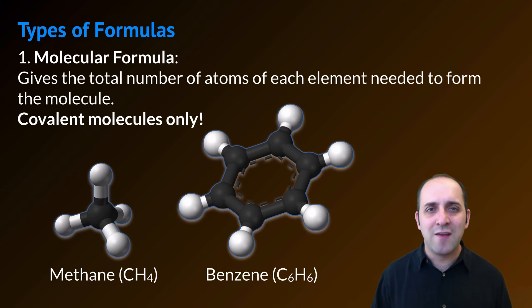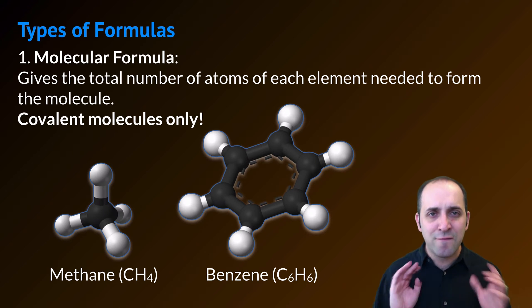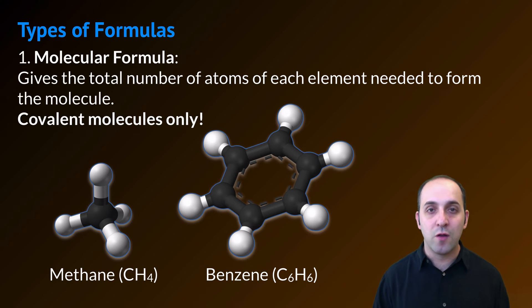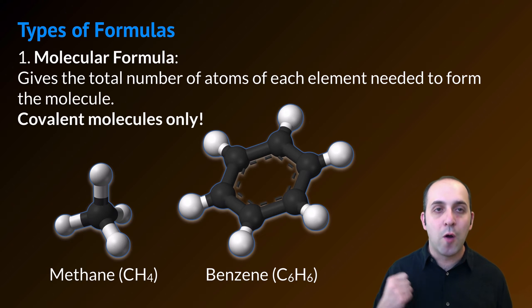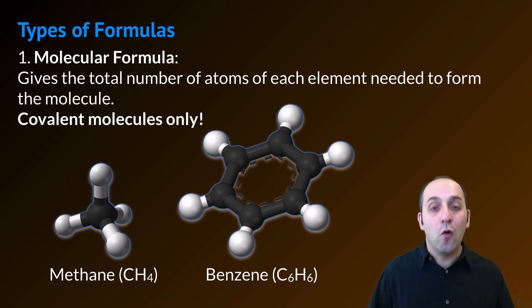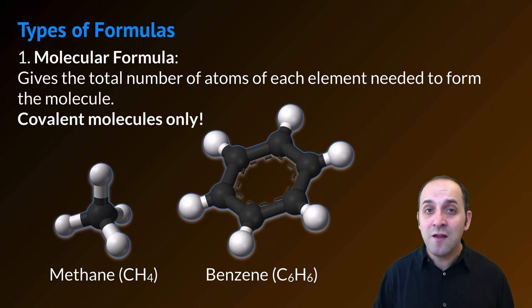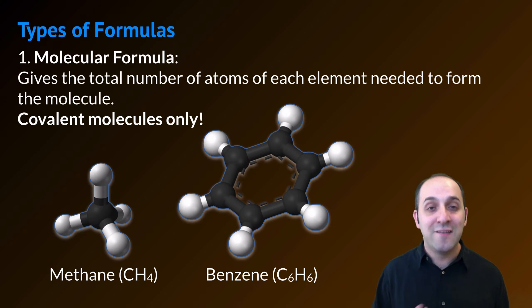We've already been dealing with the concept that there are different types of formulas, but let's formalize that here before we look at the math inside of them. One type of formula is what's called a molecular formula. This gives us the total number of atoms of each element needed to form a particular molecule. This is only true for covalent molecular substances. Methane is CH₄ — it's made out of one carbon and four hydrogen atoms. Benzene is C₆H₆, made out of six carbons and six hydrogens.